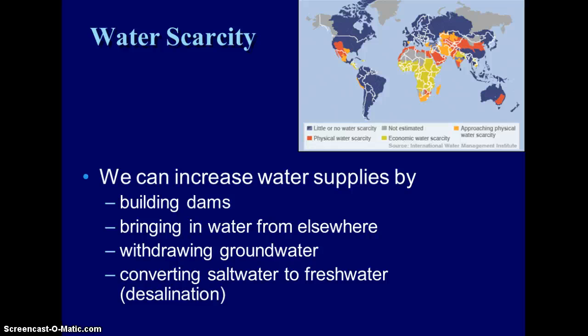If you look at the map here at the top, you can see that in the southeast United States we're lucky and have very little water scarcity problems. We do see problems in the southwest with physical water scarcity and approaching physical water scarcity. But if you look at Africa and Asia, where most of the people on earth live, you really see where those problems are arising.